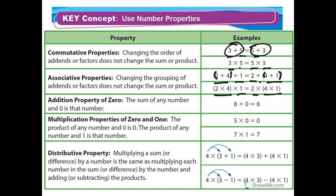The addition property of zero: the sum of any number and zero is that number. So eight plus zero is eight, and even one million six hundred twenty-five thousand eight hundred twenty-four plus zero is that same number.